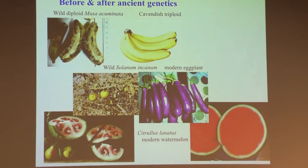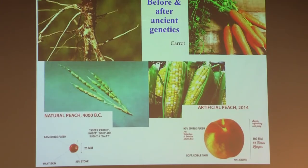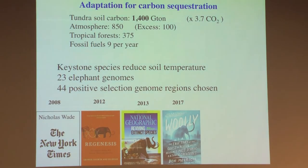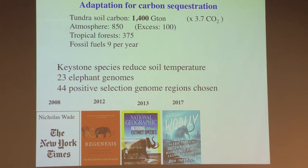Just to give quick examples of what ancient genetics can do: watermelons were mostly rind, bananas were mostly large black seeds, eggplants were little berry-like things, carrots and corn looked very different. I should mention I've had DOE energy funding since I started my lab in 1987, for which I'm very grateful — it's been the longest and most important grant of my entire career.